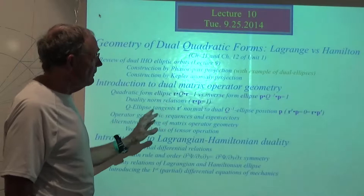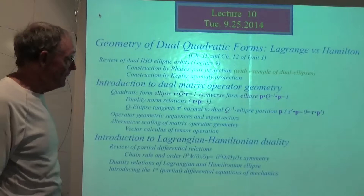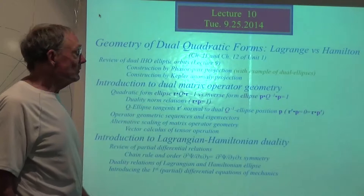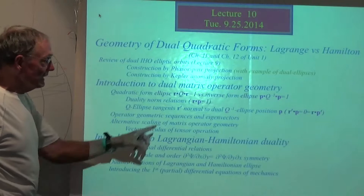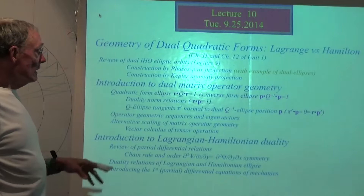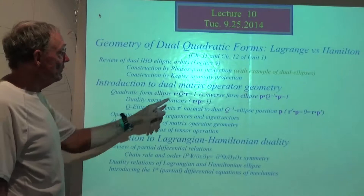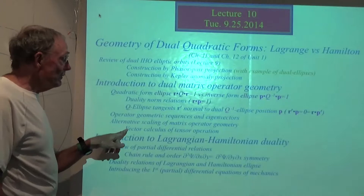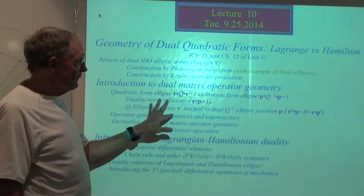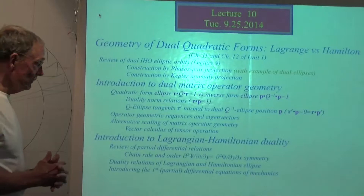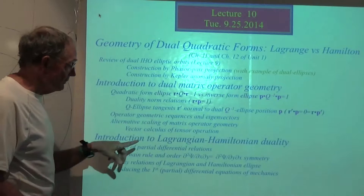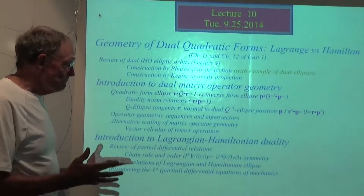We'll show how each of these operators, applied one after the other, makes a group. We'll look at sequences that terminate on eigenvectors, and see about the eigenvectors of these matrices from this geometric point of view. There's also a question of how you scale to plot the geometry of this algebra, and a simple vector calculus explanation of the geometry occurring with these dual ellipses. The lecture aims toward the Lagrangian and Hamiltonian ellipses.